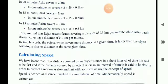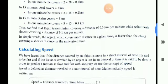Travels fastest by Rajan, that is a distance of 0.3 kilometer per minute, while Ashu travels slowest covering a distance of 0.1 kilometer per minute.